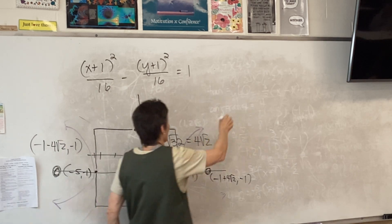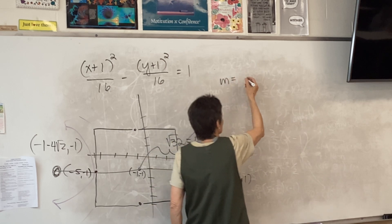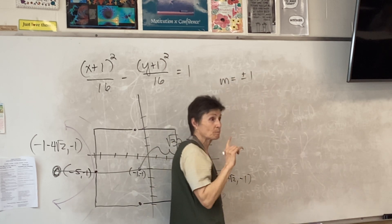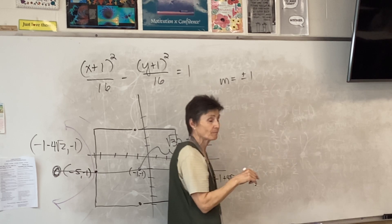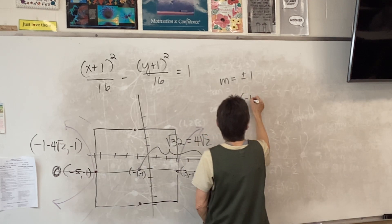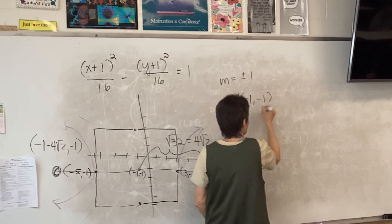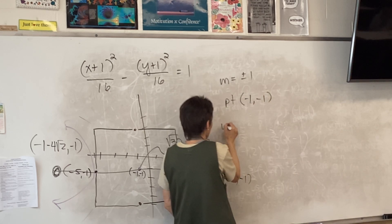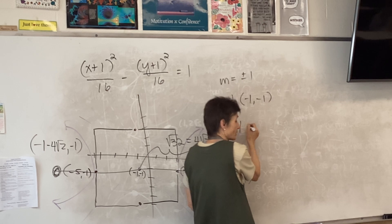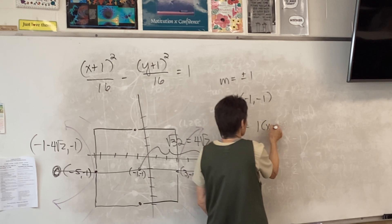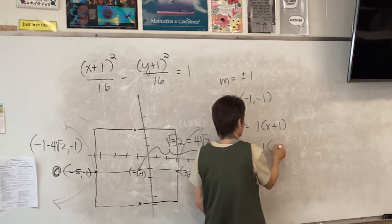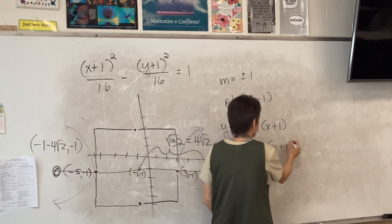Asymptotes — what's my slope? One, or negative one — it's always plus or minus because there are two of them. What's my point? Negative one, negative one. So: y plus one equals one times x plus one, and y plus one equals negative one times x plus one. If you have forgotten your point-slope form, you had best get it down.